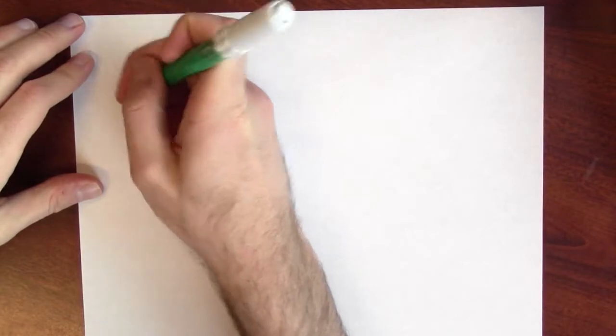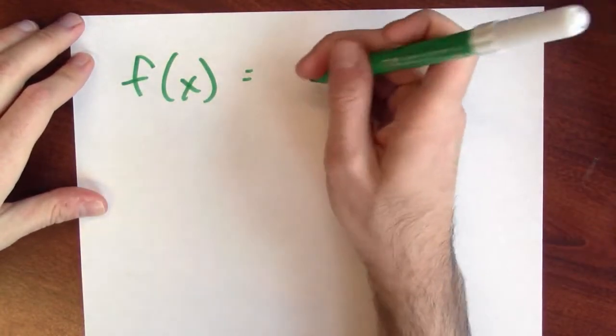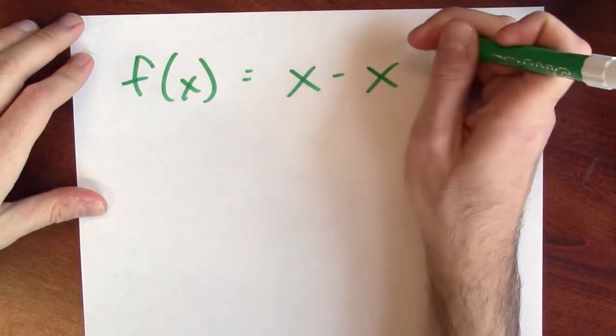Really, why do we have to even bother checking endpoints? So let's suppose that I want to find the maximum and minimum values of this function, f of x equals x minus x cubed.